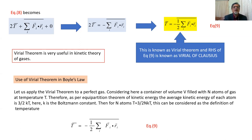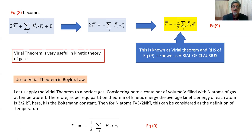The Virial Theorem is useful in kinetic theory of gases. Let us apply the Virial Theorem to a perfect gas. Consider a container of volume V filled with N gas atoms at temperature T in Kelvin. As per the equipartition theorem of kinetic theory, the average kinetic energy of each gas atom is three-halves kT, where k is the Boltzmann constant. For N atoms, the total kinetic energy T equals three-halves NkT.